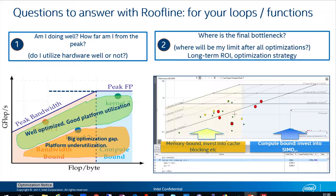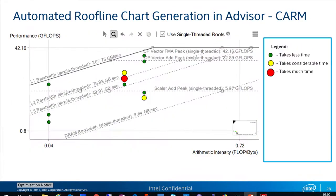Here is how roofline looks in Advisor. We show more roofs than just the two basic ones — we show different compute roofs corresponding to scalar, vector, single precision, double precision, and FMA compute roofs. For memory roofs, we show different cache level bandwidths so you can see if you're hitting memory or some cache level limits. We also have a color scheme that lets you quickly see hotspots — large red points are your hotspots that you probably want to concentrate on.